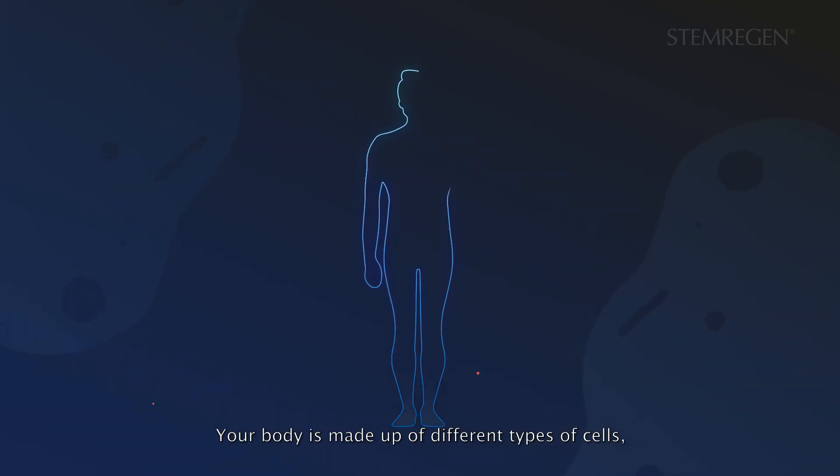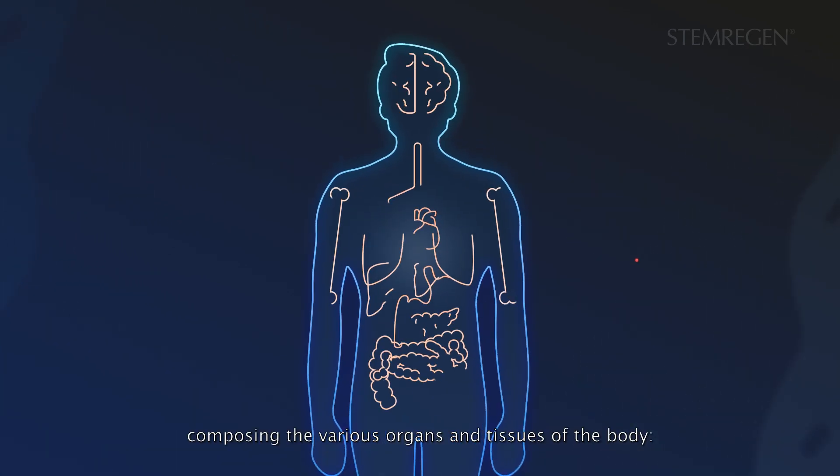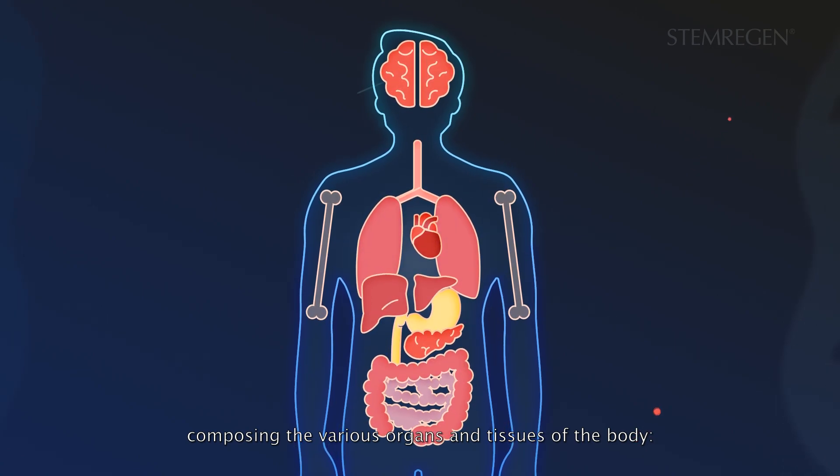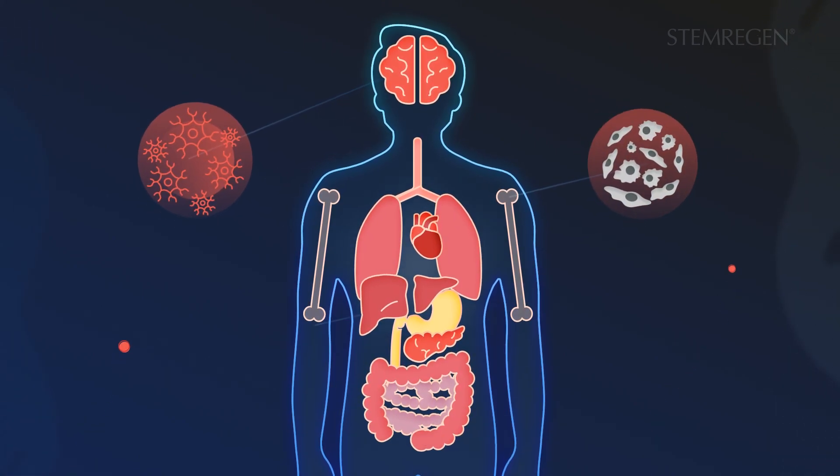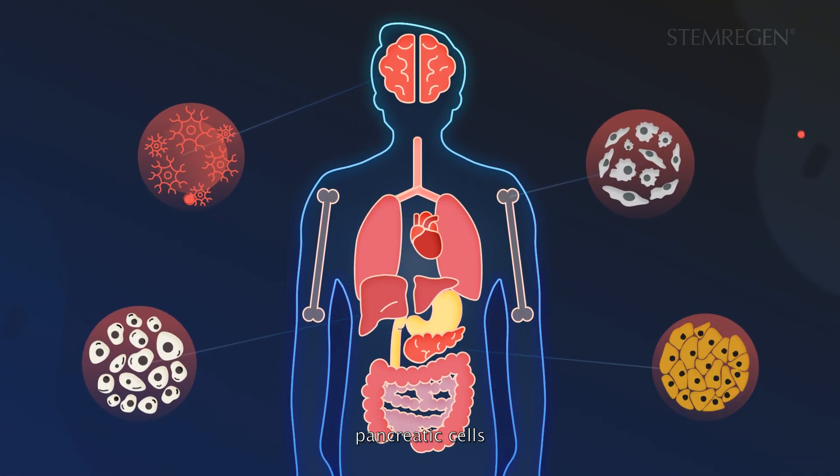Your body is made up of different types of cells composing the various organs and tissues of the body. Brain cells, bone cells, liver cells, pancreatic cells, and many more.